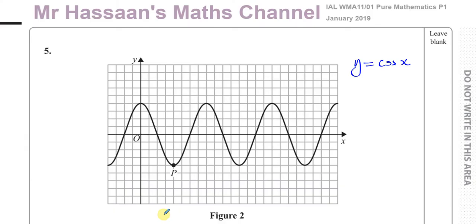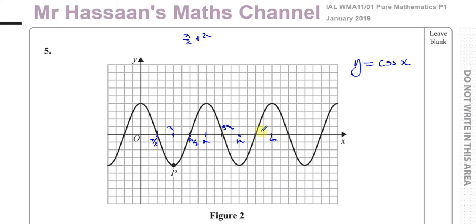If you forgot those values, you can use your calculator. Remember: cosine of pi over 2 gives you 0, cosine of pi gives you minus 1, and so on. Imagine this was cosine x — this would be pi over 2, this would be pi, this would be 3 pi over 2, and this would be 2 pi. Cosine x repeats every 2 pi. So this point here is 2 pi, this is 4 pi, this is pi, this is 3 pi, and this is 5 pi over 2 and so on. That's how the cosine curve repeats — the same pattern repeats again.